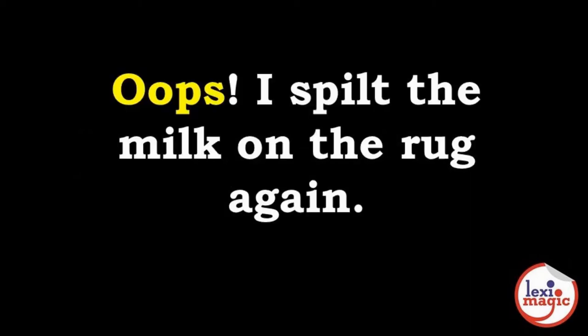An interjection is a word that expresses emotion or an emotional state. Example: 'Oops, I spilled the milk on the rug again.' In this example, 'oops' is an interjection or exclamation used to express a minor mistake.